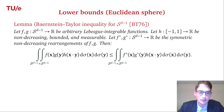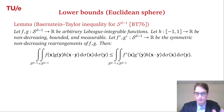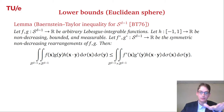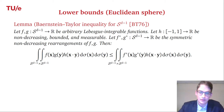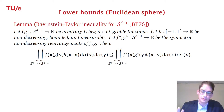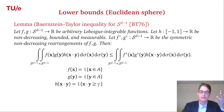To obtain the lower bound, we use the Brascamp–Lieb–Luttinger rearrangement inequality from the 1970s. This is an inequality between a double integral of f, g, and h on the left-hand side, and on the right-hand side f*, g*, and h, where f* and g* are the symmetric non-decreasing rearrangements of f and g — a classical tool from functional analysis.